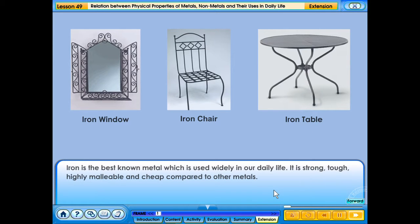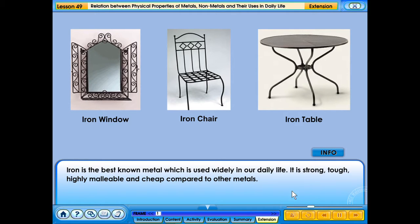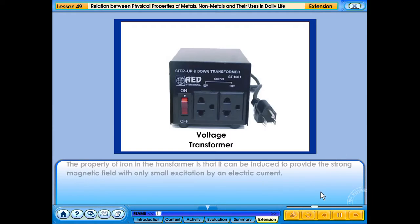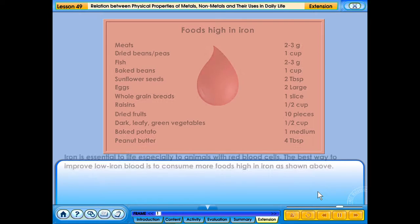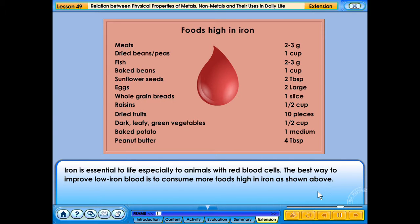Iron is the best known metal which is used widely in our daily life. It is strong, tough, highly malleable and cheap compared to other metals. Click info button to know more about iron. The property of iron in the transformer is that it can be induced to provide a strong magnetic field with only small excitation by an electric current. Iron is essential to life, especially to animals with red blood cells.